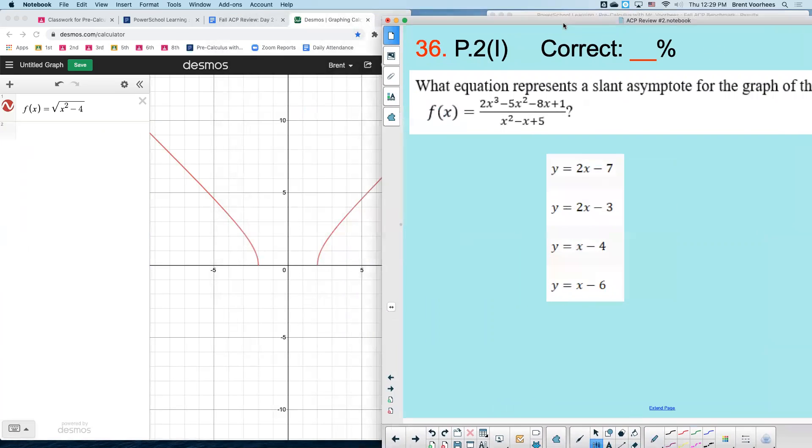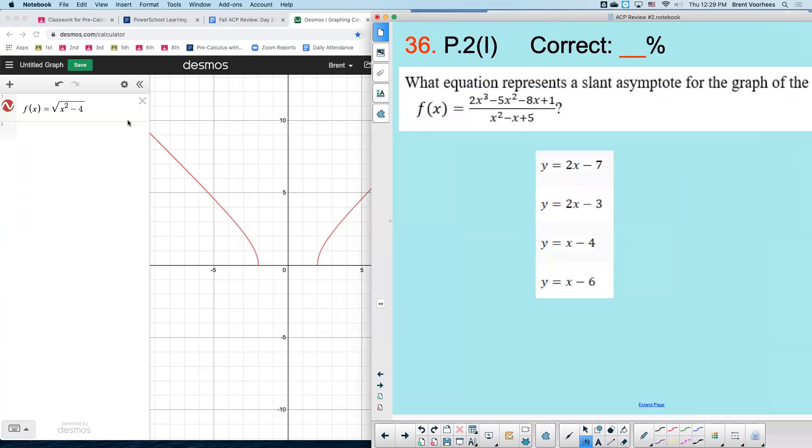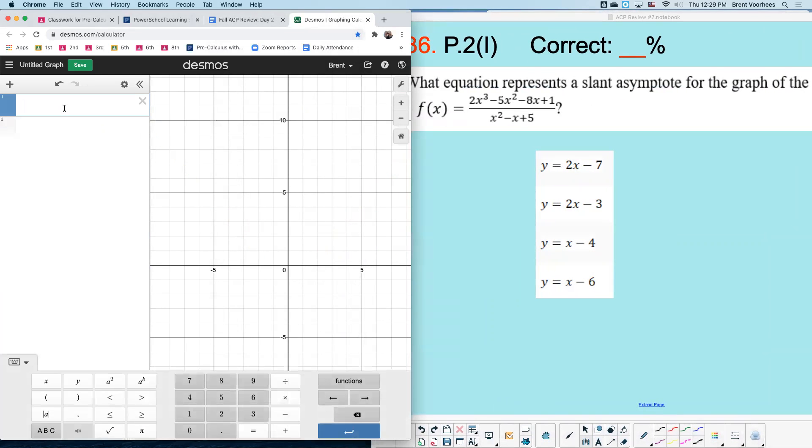what's the slant asymptote for this function? So what I'm going to first do is graph it, and I'll show you the easy way of getting an answer.